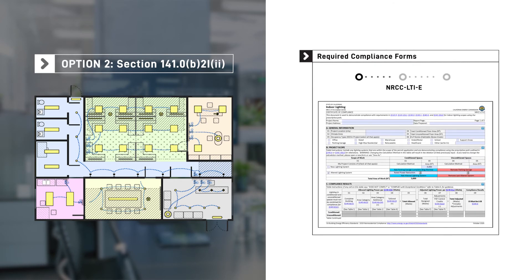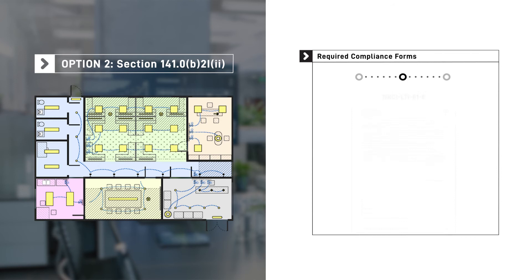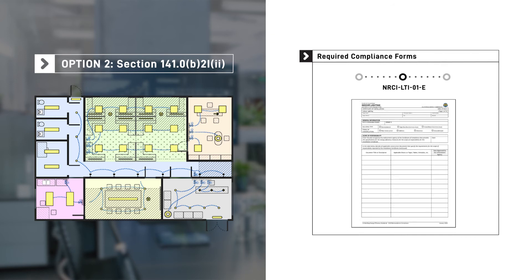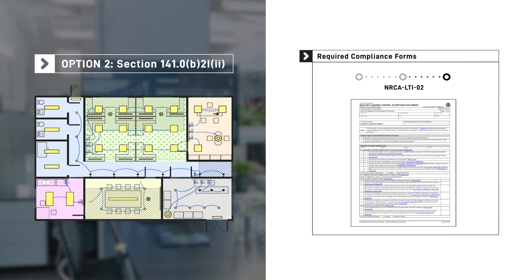Form NRCC-LTI-E is used to document the lighting power allowance calculations, lighting schedule, and specified lighting controls. Certificate of Installation Form NRCI-LTI-01-E and Certificate of Acceptance Form NRCA-LTI-02 for automatic shutoff controls are also required for this project to document installed system details and acceptance testing results.